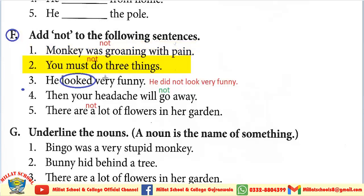आपके लिए red के साथ ये solve की हुई है। आपने अच्छी तरीके से इसको as it is solve करना है। इस sentence में 'looked' जो है, ये second form of verb है। Second form of verb का मतलब है कि ये past definite का sentence है। जब हमने past definite को negative में convert करना है तो हमें helping verb चाहिए — 'did'। So we convert it as: 'He did not look very funny.'